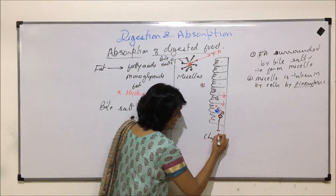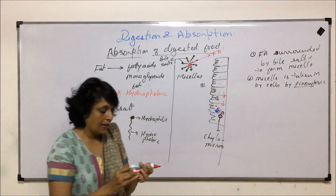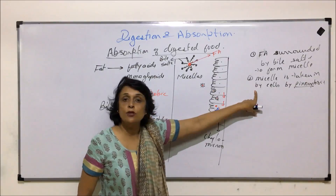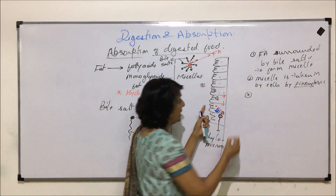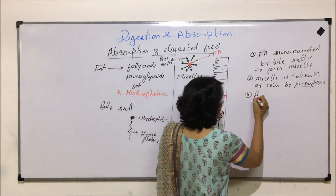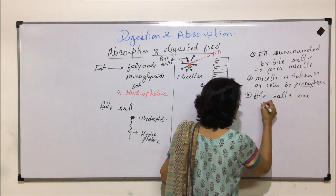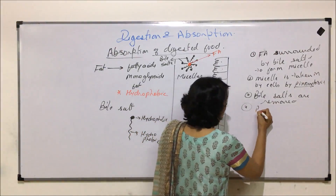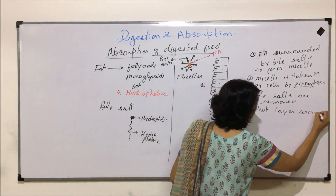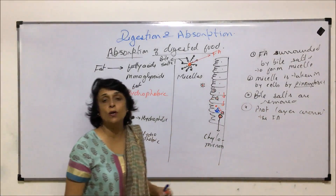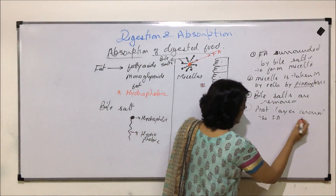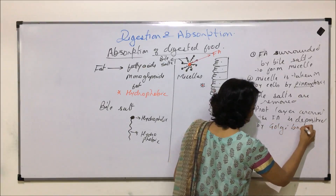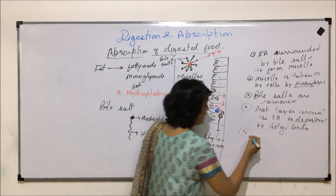So when this particle passes through the Golgi, it gets surrounded by a protein layer. This fat or fatty acid molecule which is surrounded by a protein layer is known as a chylomicron. The Golgi body deposits a protein layer around the fatty acid. The structure formed is called a chylomicron.